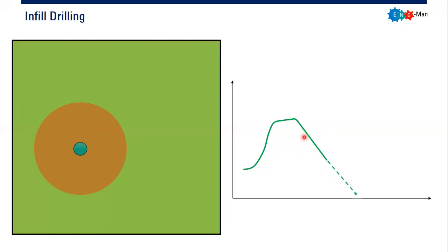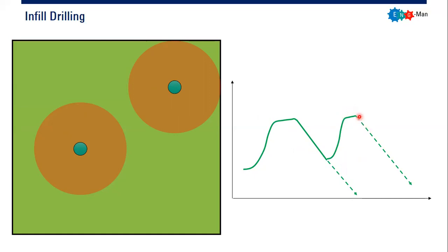Of course we want to add reserves, and that's why we perform infill drilling. This new well gives us a production contribution, so production increases again due to this new well. At some point we reach a new plateau period. What's interesting is that after we reach the pseudo steady state flow regime in this second well and enter the second decline period, we see the decline rate is actually the same as the initial decline rate with only one well.